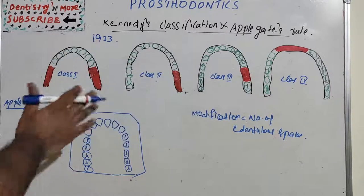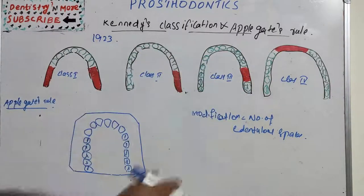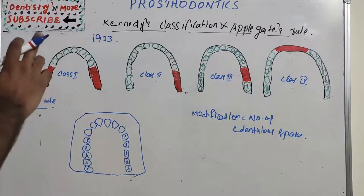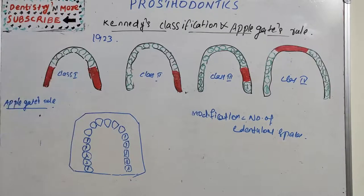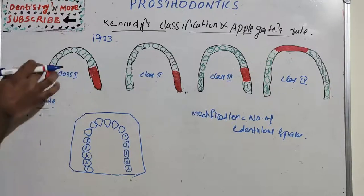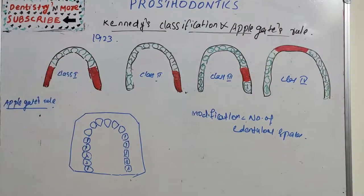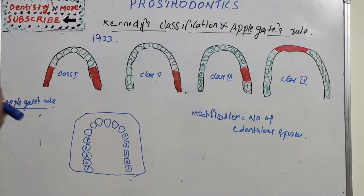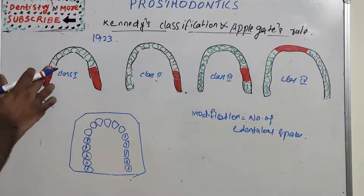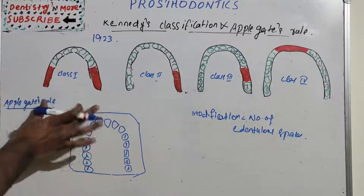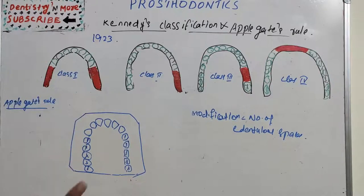Kennedy classified edentulous spaces into 4 classes: 1, 2, 3, and 4. Class 1: from the picture it's very clear — the missing teeth on the bilateral side, that is the most posterior areas are missing. It is the missing of some or all teeth on both sides in a single arch, and there are no teeth posterior to the edentulous area. That is Class 1.